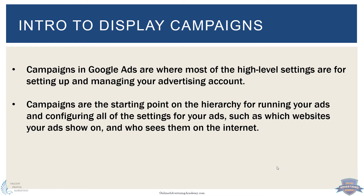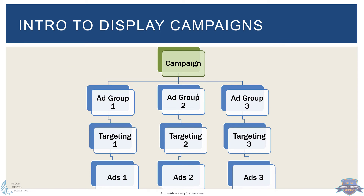Campaigns in Google Ads at the campaign level — this is the highest level of settings you're going to set up for managing your advertising campaigns. Campaigns are the starting point of the hierarchy where you configure everything, including which websites you want your ads to show on. All your controls are at the campaign setting and you'll select display campaign, search campaign, or things like that.